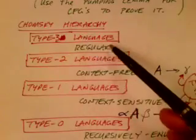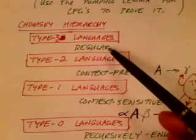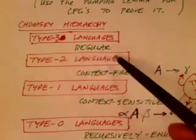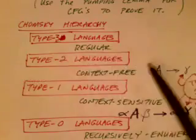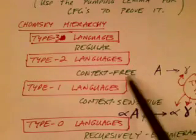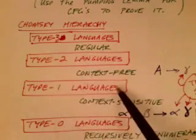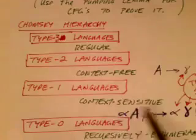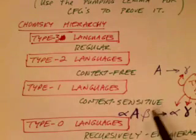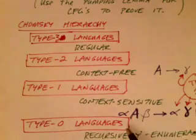Type 3 languages are regular languages. Type 2 languages are the context-free languages. Type 1 languages are context-sensitive languages. And finally, we have type 0 languages.